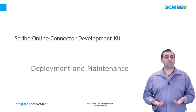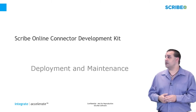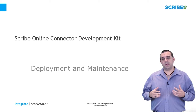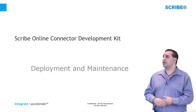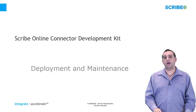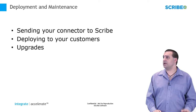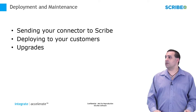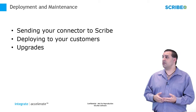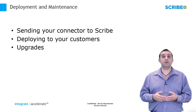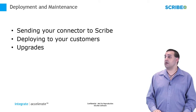We've talked about getting ready for certification. Now let's assume that we're ready to go — we think we're ready to send everything off to Scribe for certification. We're going to talk about the deployment process: once you think you're done with your code, we'll cover sending your connector to Scribe Software, deploying your connector to your customers, and how to deal with upgrades later on.